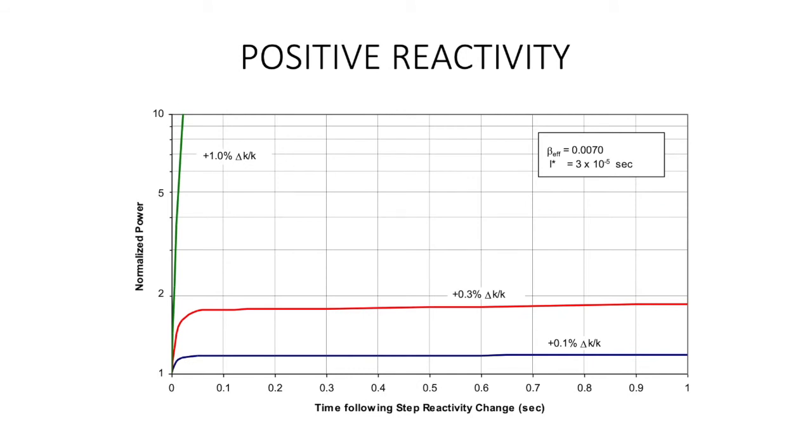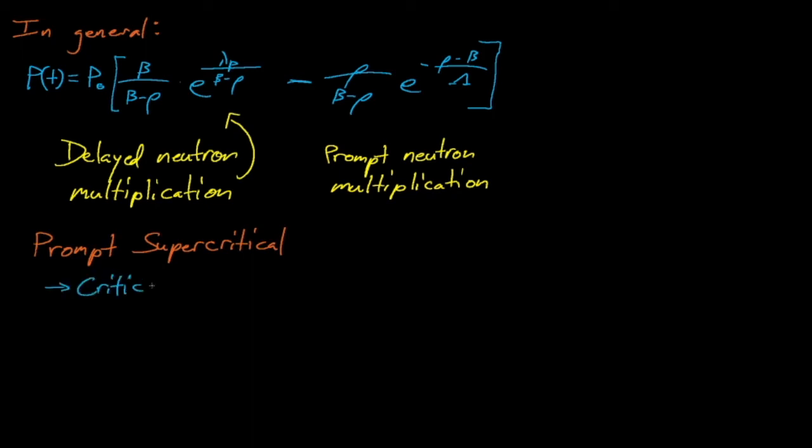As we can see in the plus one percent reactivity insertion, there is a threshold beyond which delayed neutrons can no longer hold back the rate of a reactor's power increase. The point where delayed neutrons no longer matter is known as prompt supercritical. At prompt supercritical, the system has enough reactivity to be supercritical using prompt neutrons alone. At this point, the reactor's power actually increases exponentially just like it did during our earlier example in this lecture. So for a reactor to be supercritical using prompt neutrons alone, its reactivity must exceed beta.